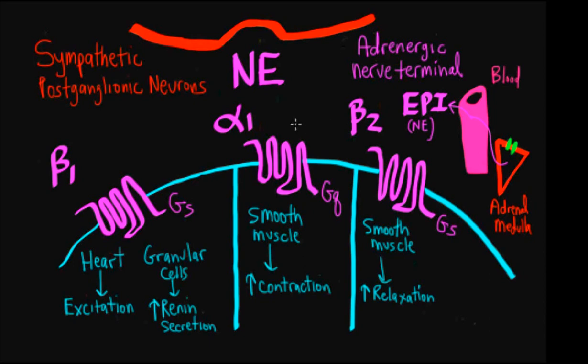Alpha-1 receptors, they're coupled to GQ. So they're going to increase intracellular calcium. The calcium calmodulin is going to activate myosin light chain kinase and result in an increase in smooth muscle contraction.